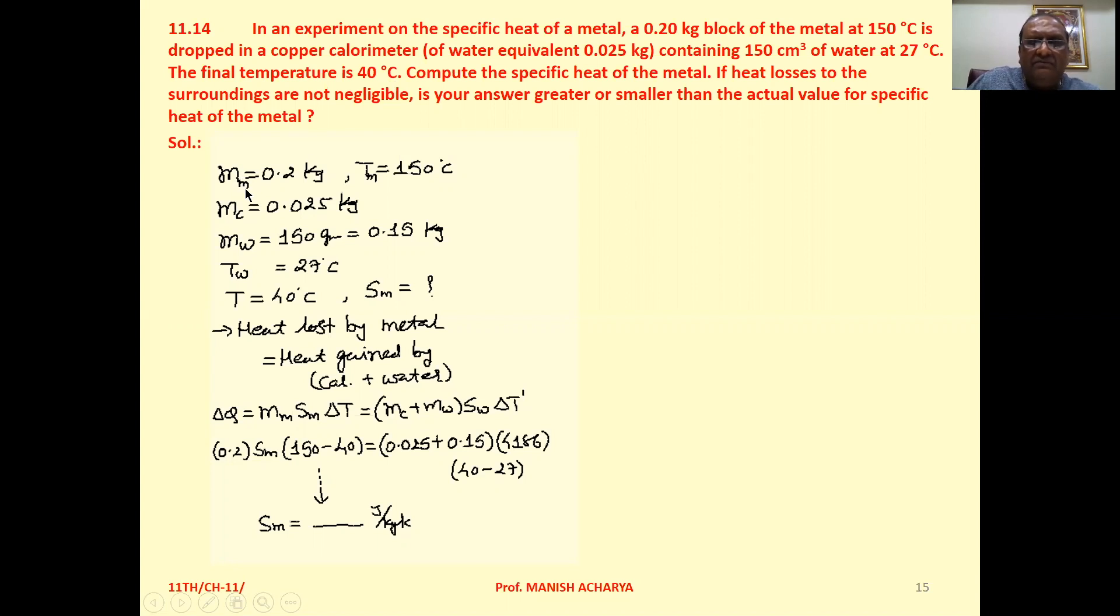Now see, mass of metal is 0.2 kilogram, temperature of metal 150 degrees Celsius. Mass of calorimeter is 0.025 kilogram. Mass of water is 150 gram, that is 0.15 kilogram.